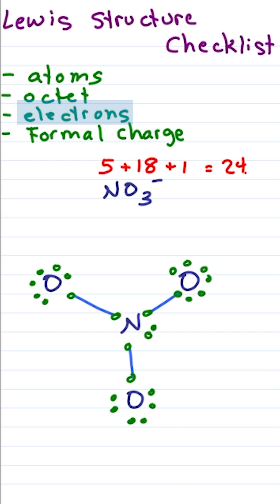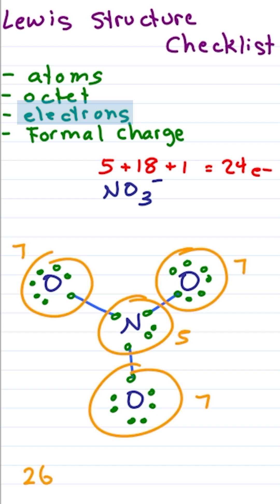We should have 24 electrons. 7, 7, 7, and 5 for a total of 26 when I should have 24.